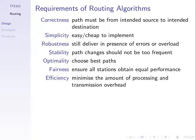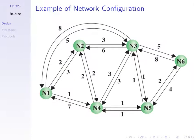Some requirements for a routing algorithm: First, it should be correct. If we want to get from node 1 to node 6, and the algorithm returns the path node 1 to node 2 to node 4, that's incorrect. If the algorithm claims the path from node 1 to node 6 is 1, 2, 4 — it's wrong. A basic requirement is that the algorithm finds a path to the actual destination.